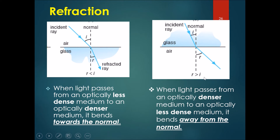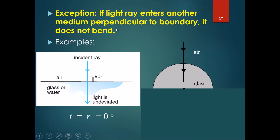When light passes from an optically denser medium to a less dense medium, it bends away from the normal. So if light comes from glass, the angle in glass is smaller, but once it hits the boundary it bends away from the normal, creating a bigger angle in air. One exception: if a light ray enters a medium perpendicular to the boundary — at 90 degrees — it does not bend and just goes straight through undeviated.